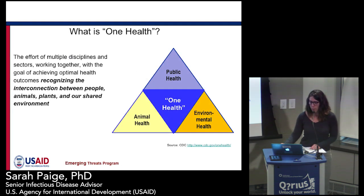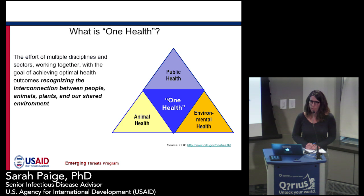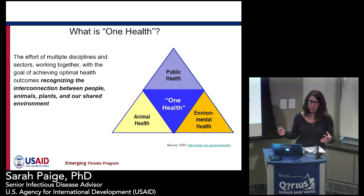One Health is the effort of multiple disciplines and sectors working together with the goal of achieving optimal health outcomes, recognizing the interconnections between people, animals, plants, and our shared environment. We often struggle to manifest environmental health in this space — it has traditionally focused on contamination and water sources impacting human health. The way we manifest environmental health as researchers is by looking at ecological integrity, biodiversity, and the presumed balance of an environment.